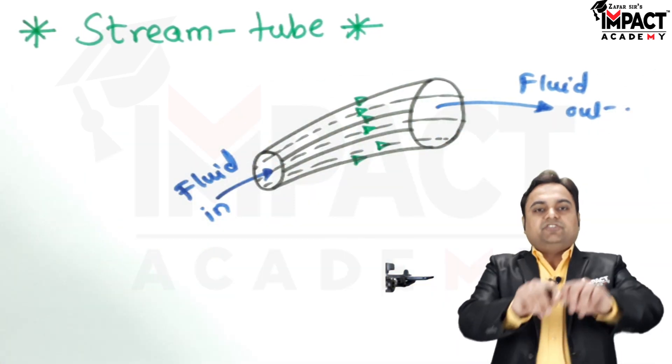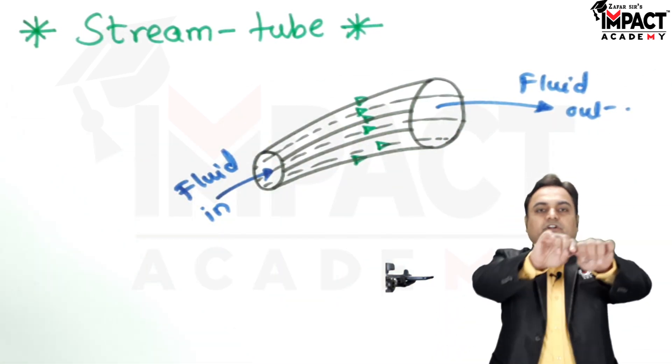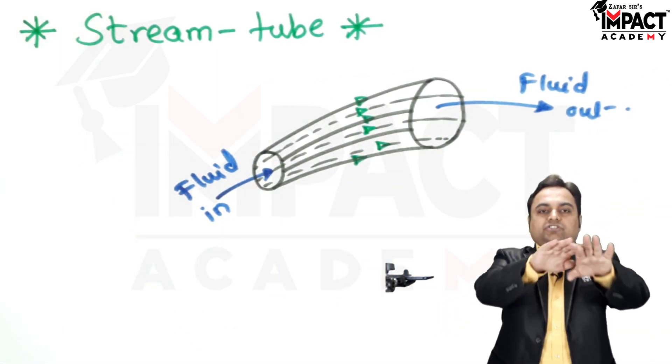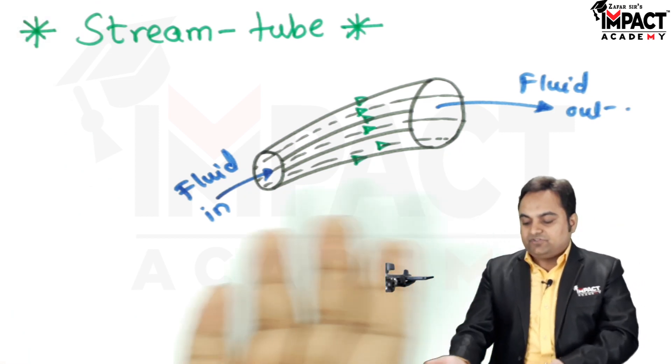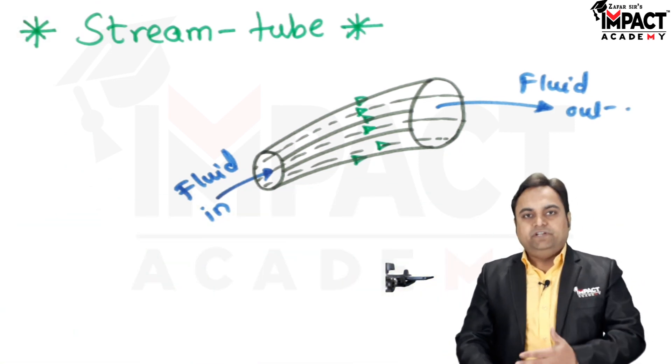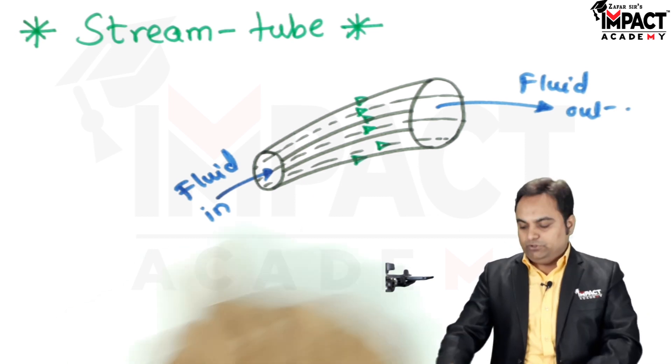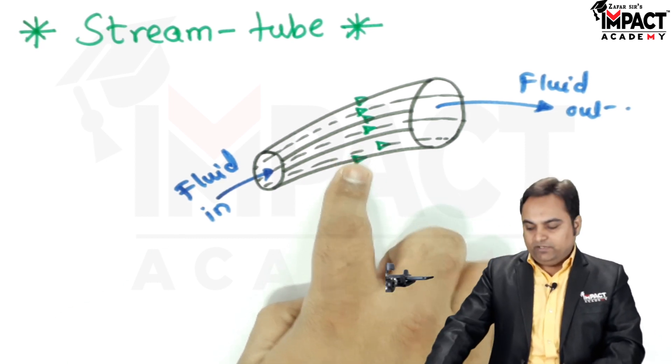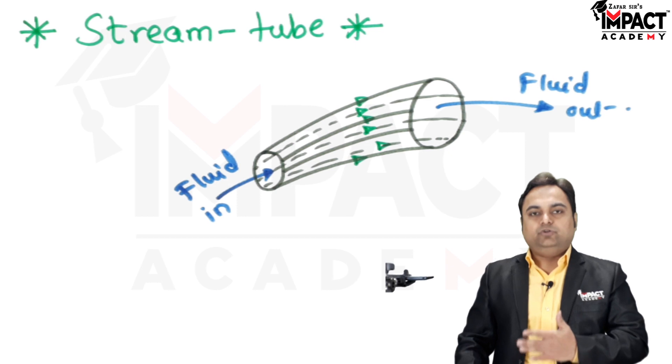So basically stream tube we can say it is a tube which is bounded by or surrounded by various streamlines and these streamlines to find their velocity that is the velocity of any point on any individual streamline we need to draw the tangent to that streamline.